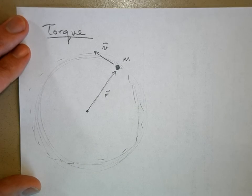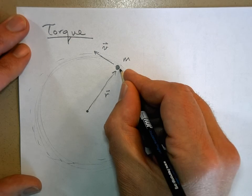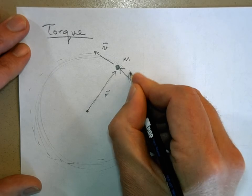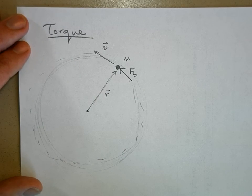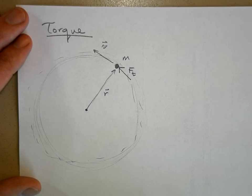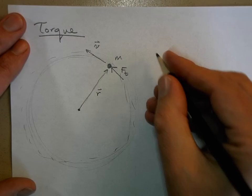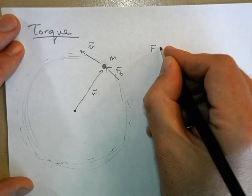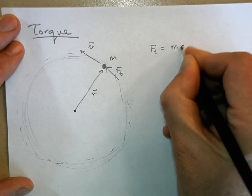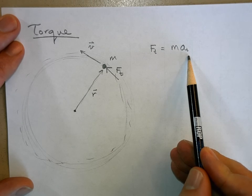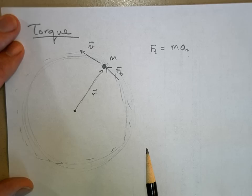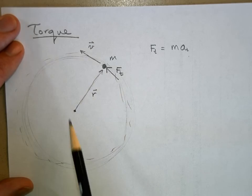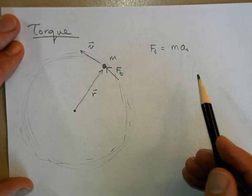It's moving in a circle — so what kind of force is there on the object? A centripetal force. But let's say there is also a tangential force, which is going to change the speed. I'll call that F sub t. F equals ma, so this tangential force equals m times a sub t — the tangential acceleration that changes the speed, not the direction, of my rotating mass.